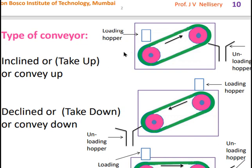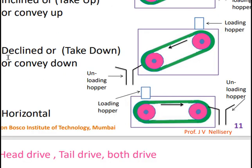There are different types of conveyors: (1) Inclined or take-up conveyor — material conveyed from bottom to top, loading hopper at the bottom and unloading hopper at the top. (2) Declined or take-down conveyor — material loaded at the top and conveyed downward. (3) Horizontal conveyor — no inclination, material loaded at one end and unloaded at the other.